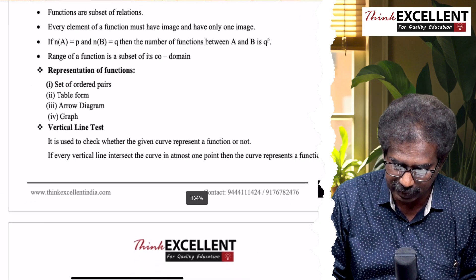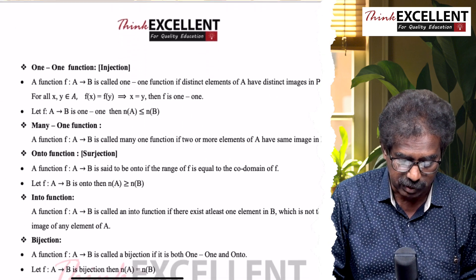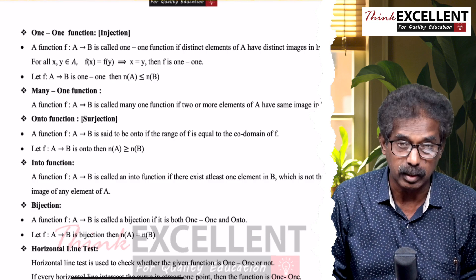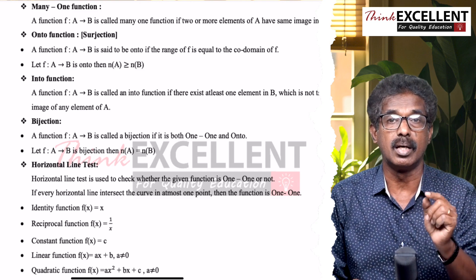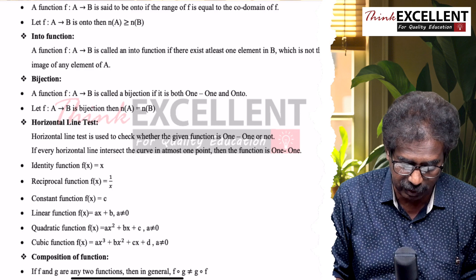There are four ways to represent: ordered pair, table form, arrow diagram, graph. Then theory questions are very important. Vertical line test - go through and state vertical line test. Then one-one function, injection. Go through and learn the definition.